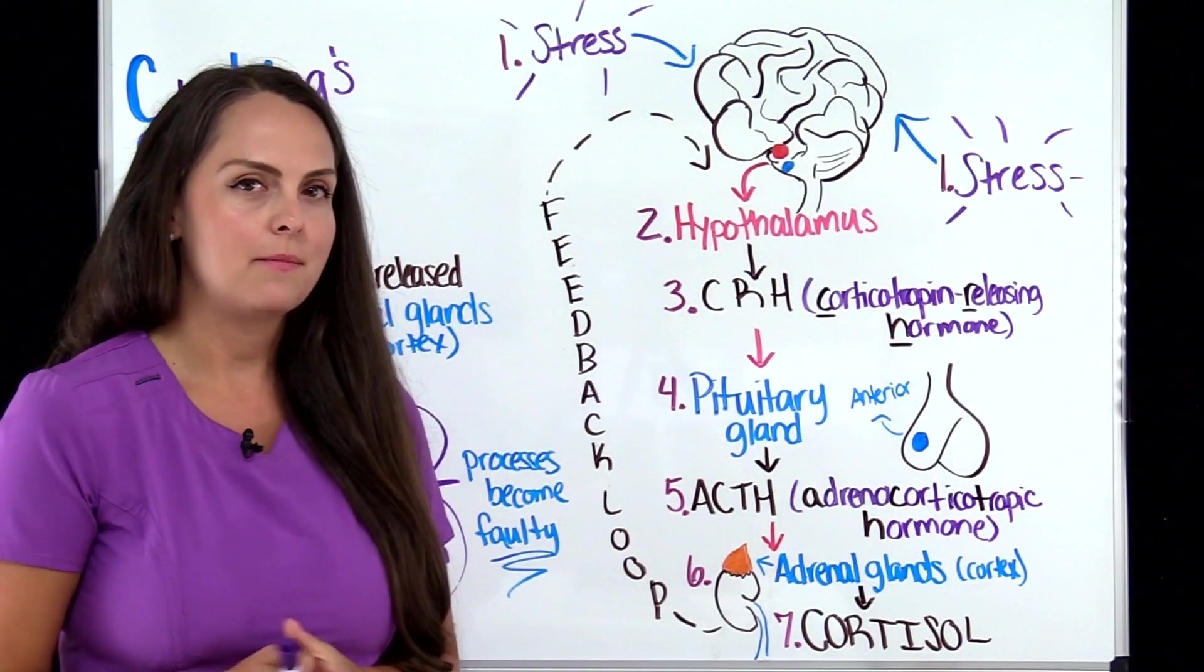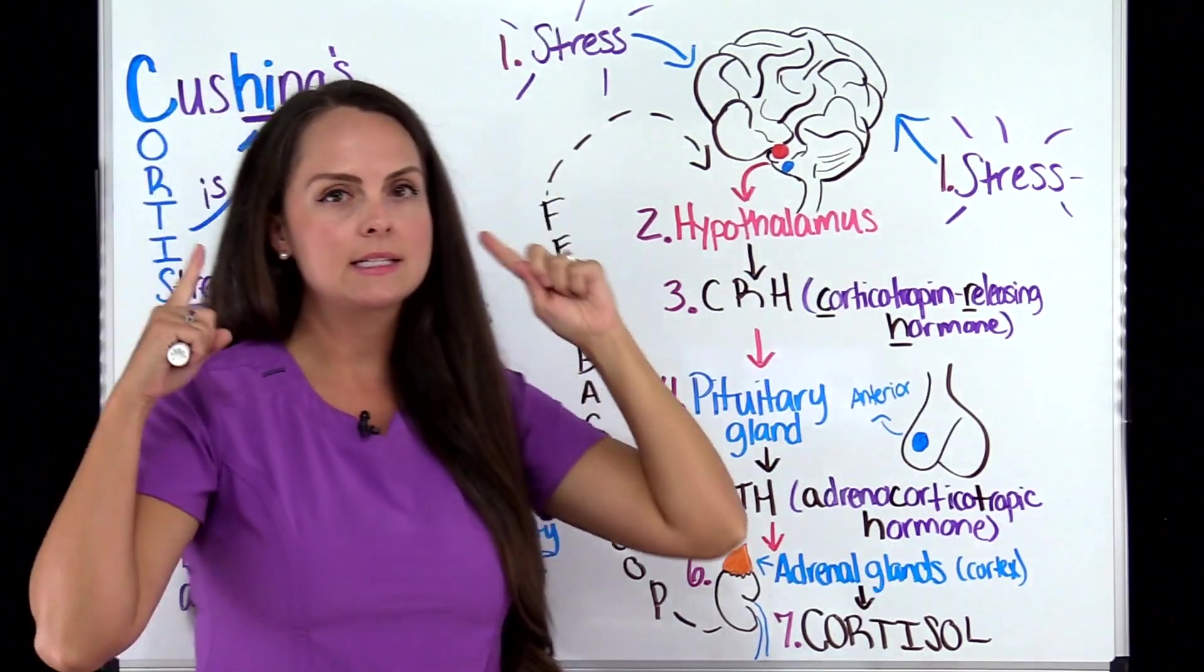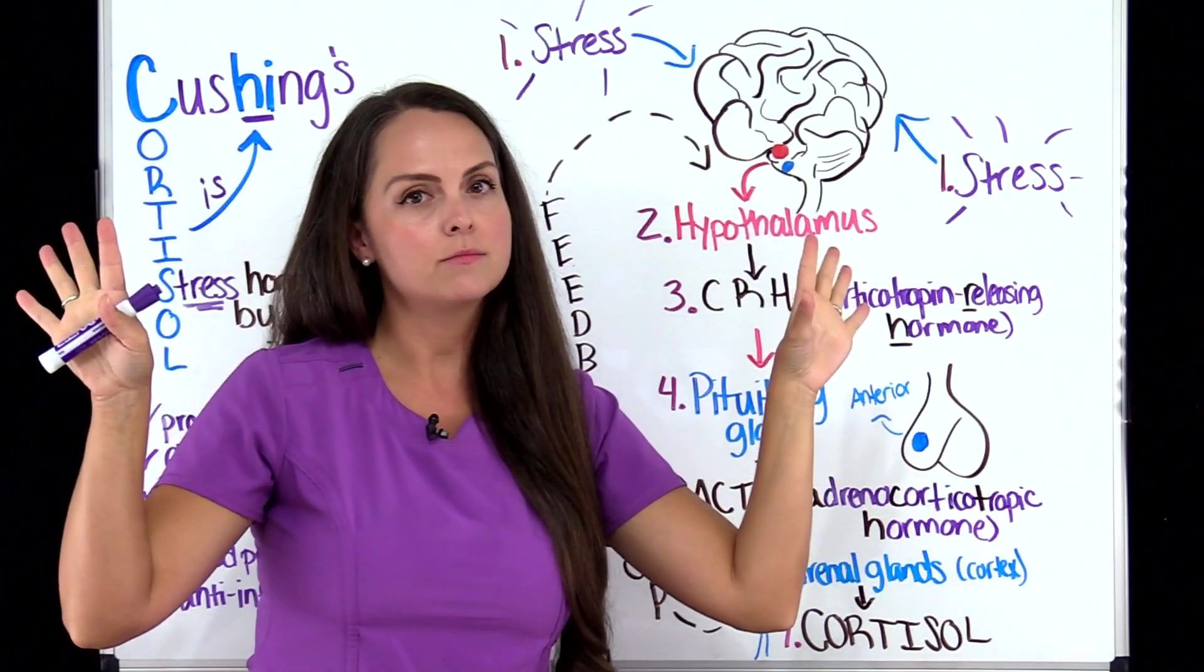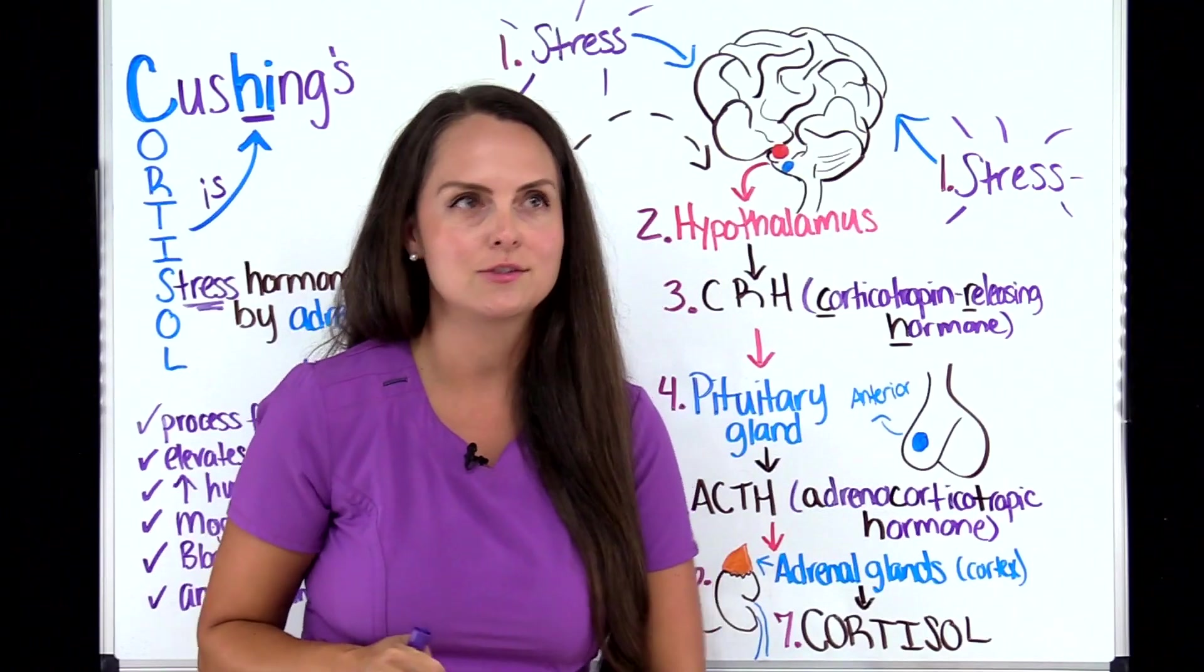So the very first step that we have is the person experiences some type of stress. The brain picks this up and says, we got something stressful going on. We got to get our stress hormone cortisol made. So it goes through these processes to do this.